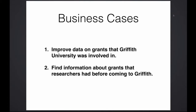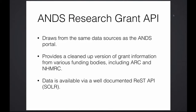This is where the ANS Research Grant API came in. As mentioned in previous talks, it draws from the same data sources as the Research Data Australia portal, so it has very comprehensive information, especially about ARC and NHMRC grants. It also provides a very nicely cleaned-up version of this grant information — data that may not be well captured in a standardized vocabulary in the source data was cleaned up and is now provided in a very nice form. The API is based on SOLR, which is a very simple to use, nicely documented enterprise search engine, so using this data was quite easy for us.